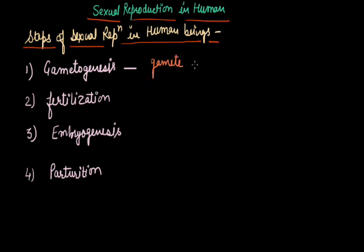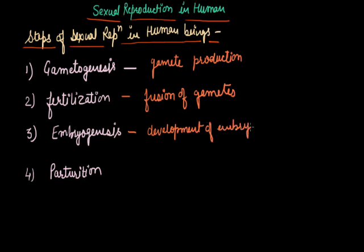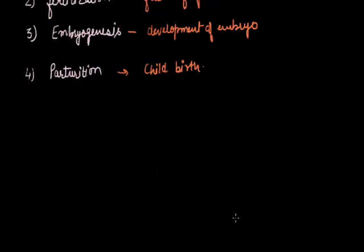In gametogenesis, gametes are produced. While in fertilization, fusion of gametes is done. After the fusion of gametes, a zygote is developed which will further develop into an embryo. Whenever the embryo is fully developed, then childbirth is done. So in today's class, we will discuss gametogenesis.